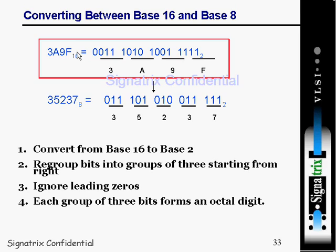The hexadecimal input is 3A9F, base 16. You replace each hex digit with its 4-bit binary equivalent: 3 becomes 0011. Then A is represented as 1010, 9 as 1001, and F as 1111.